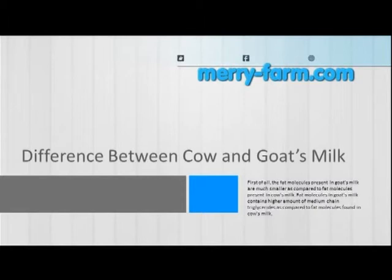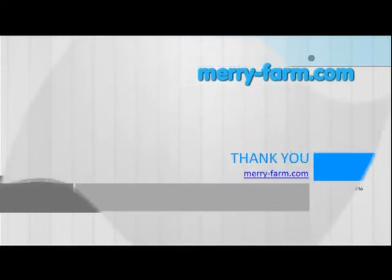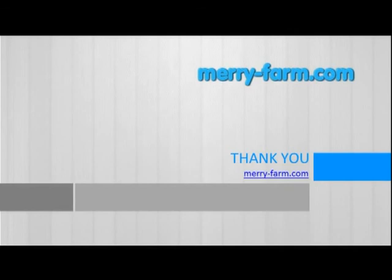First of all, the fat molecules present in goat's milk are much smaller compared to fat molecules present in cow's milk. Fat molecules in goat's milk contain a higher amount of medium chain triglycerides compared to fat molecules found in cow's milk. It is important to note that medium chain triglycerides have smaller structures compared to other types of fats.